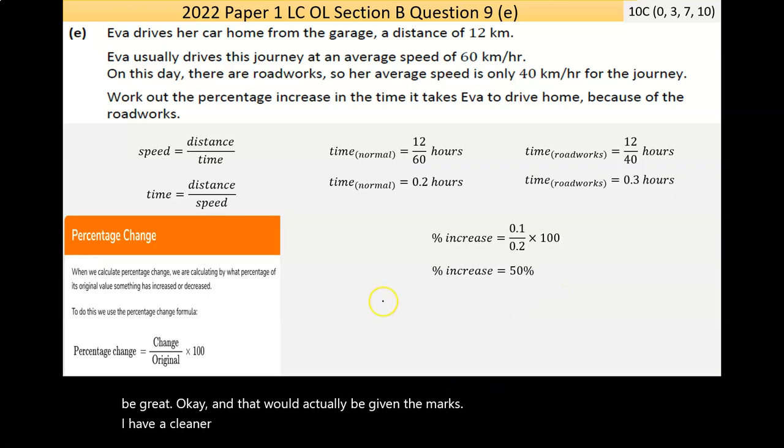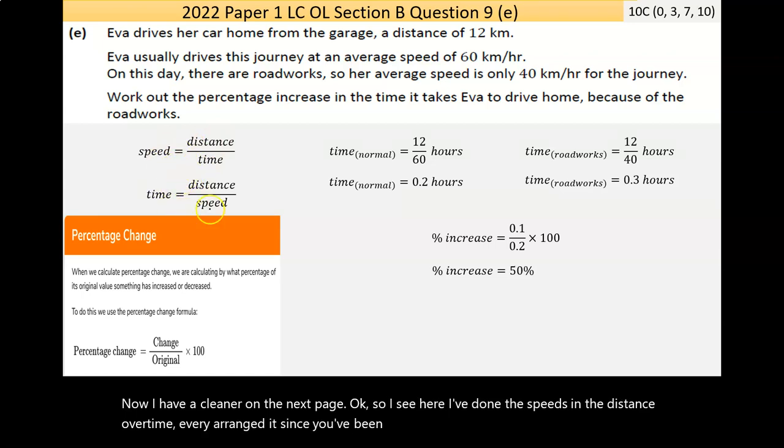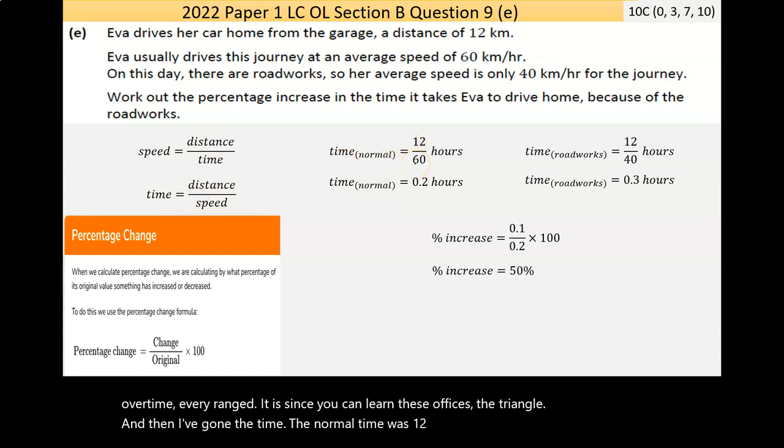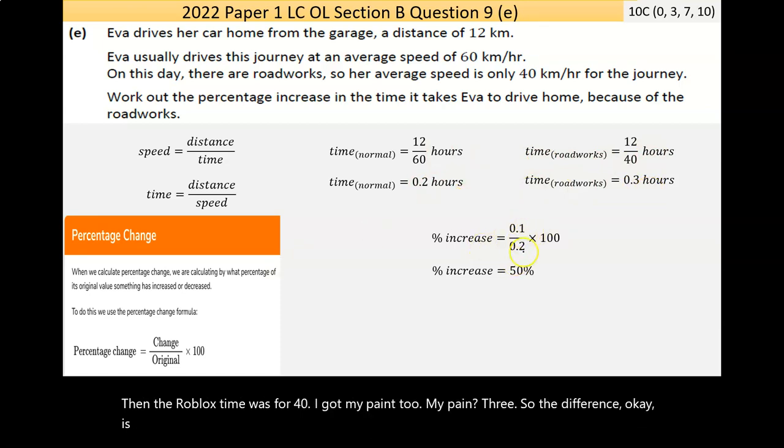I have a cleaner on the next page. I've done the speeds and the distance over time. I've rearranged it. Sometimes people learn these off, so it's the triangle. And then I've gone the time, the normal time was 12 over 60. Then the roadblocks time was 12 over 40. I got my point two and my point three. So, the difference is point one over the normal or original, is point two. Put the calculation to the calculator. I got the 50%. Tricky enough question to problem solve.